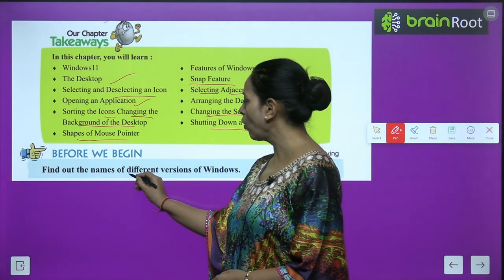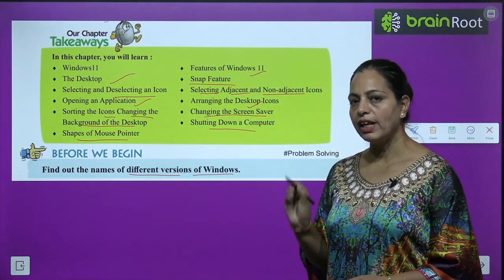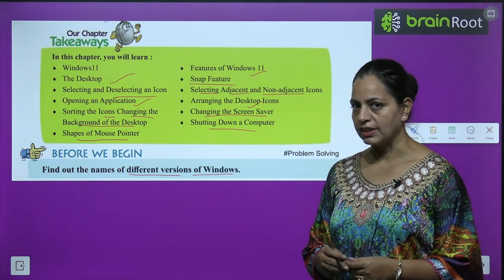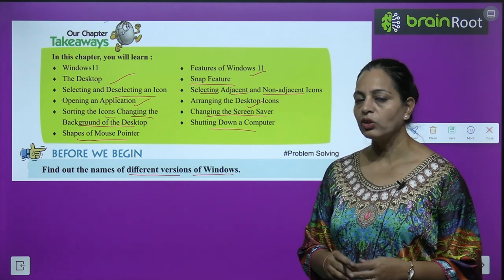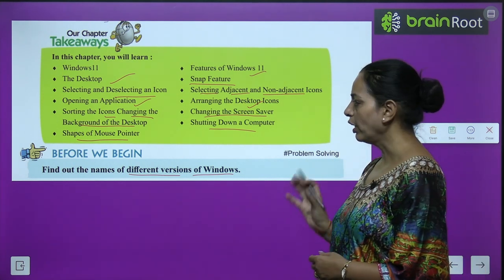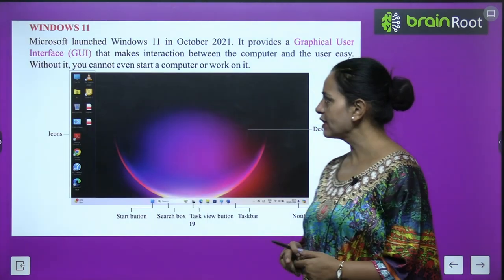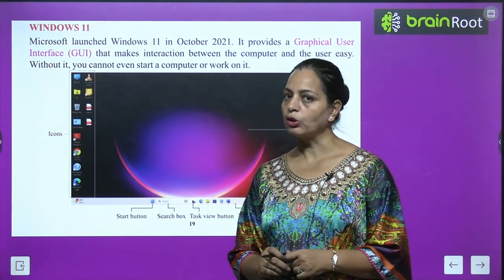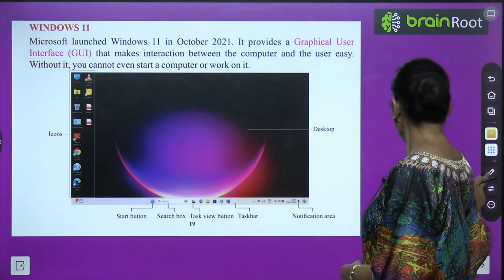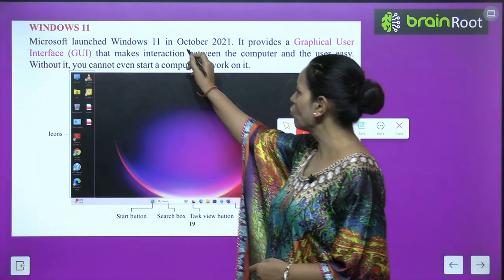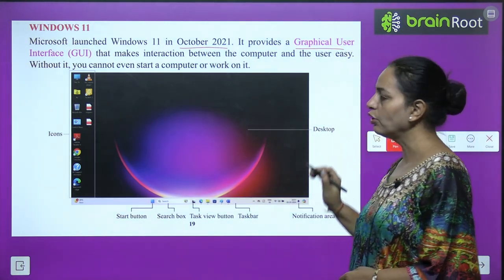Before we begin, find out the names of different versions of Windows. Before Windows 11, there were many versions of Windows, like Windows 1.0, Linux, Unix — so many versions. Microsoft launched Windows 11 in October 2021. It provides a graphical user interface.